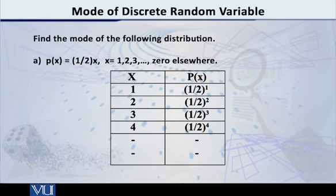The first one is 1 by 2 raised to 1, that is 1/2, that is 0.5. And the second one is 1 by 2 square, that is 1/4, that is 0.25. And the third one is half raised to 3, that is 1/8, that is 0.125.